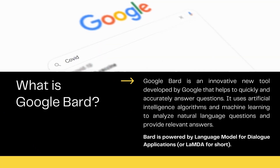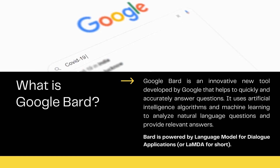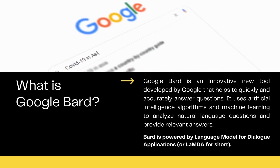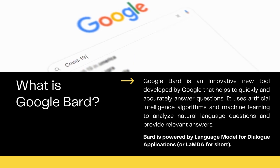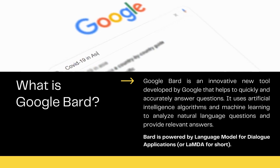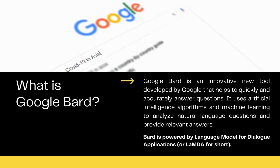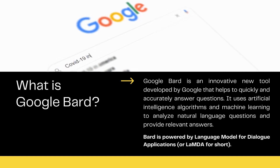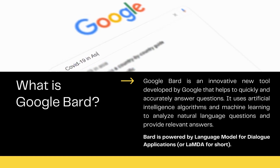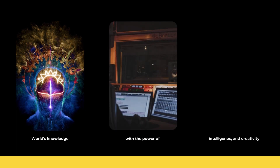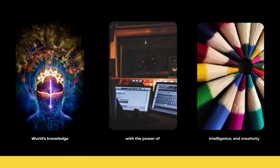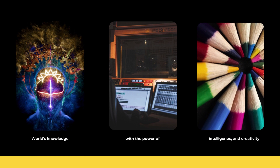What is Google Bard? Google Bard is an innovative new tool developed by Google that helps to quickly and accurately answer questions. It uses artificial intelligence algorithms and machine learning to analyze natural language questions and provide relevant answers. Google Bard is designed to provide quick and accurate answers to specific questions, and it continues to learn and improve its accuracy over time. Bard seeks to combine the breadth of the world's knowledge with the power, intelligence, and creativity of large language models. It draws on information from the web to deliver fresh, high-quality responses.